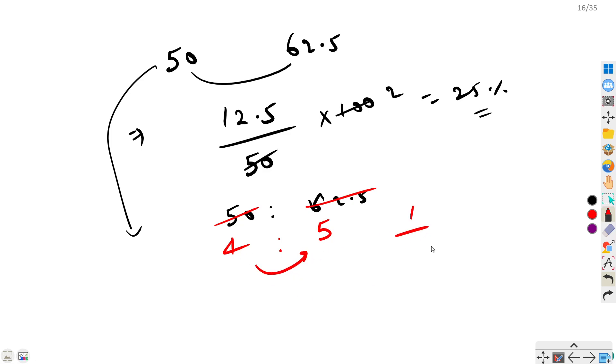You can go by either way. Usually the ratio one saves your time if you know the multiples, if you can simplify the ratio fast, then this will save you a lot of time.